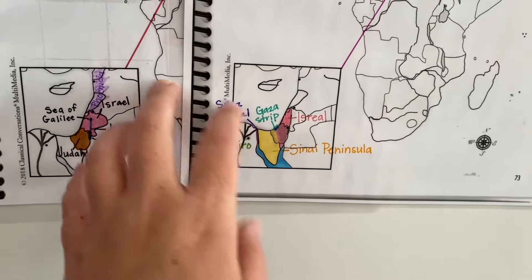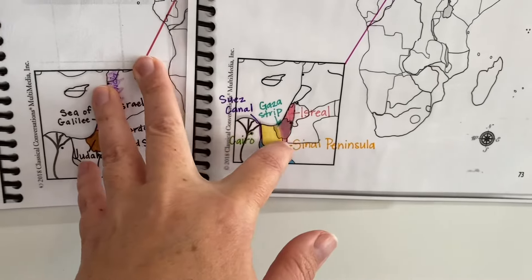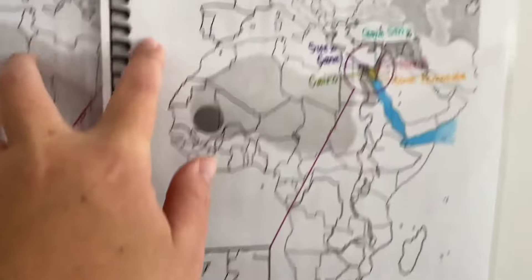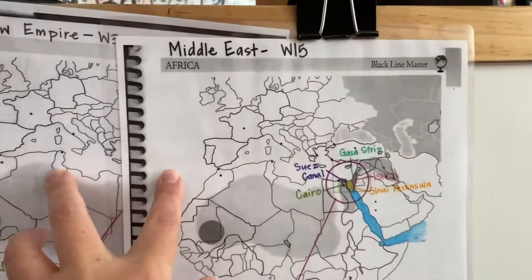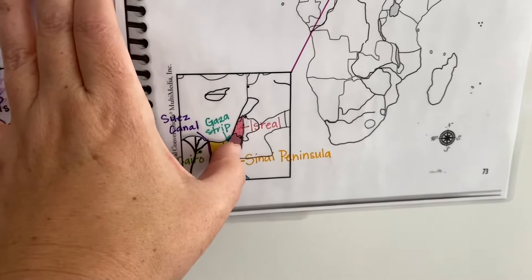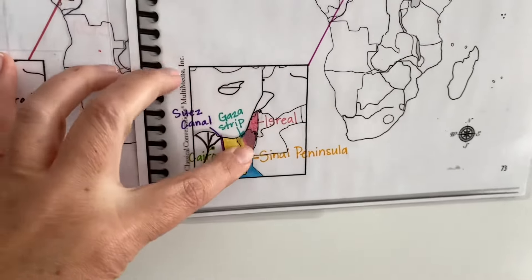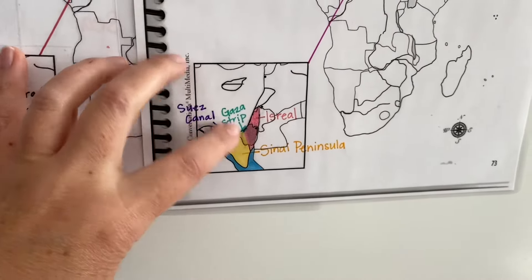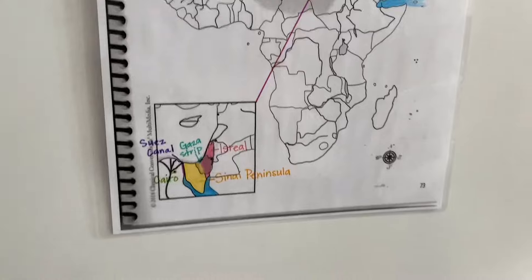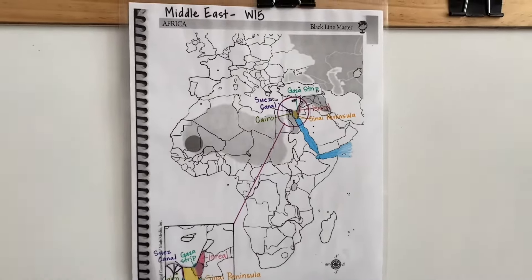Gaza is a very important part of commerce even still today. And Israel, throughout history as we have learned thus far — and we're only on week 15 — Israel has been a very war-torn country, and still is to this day.